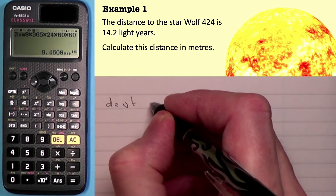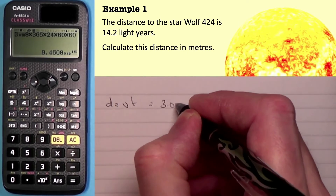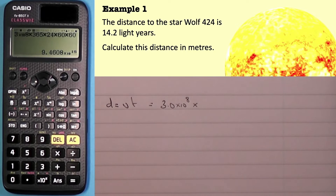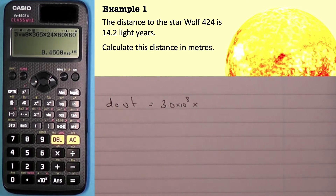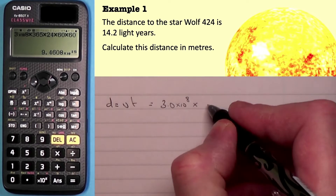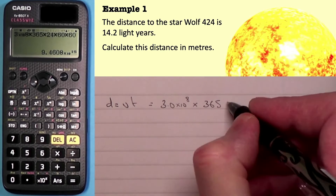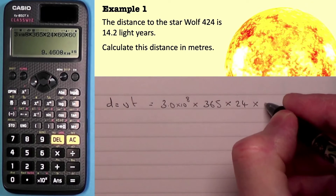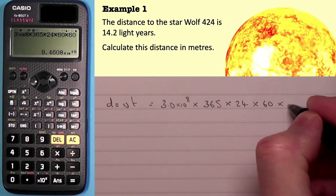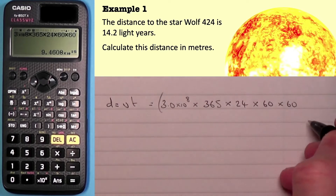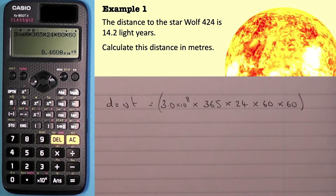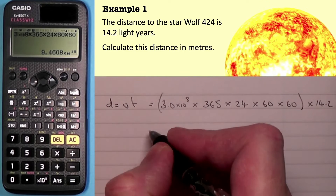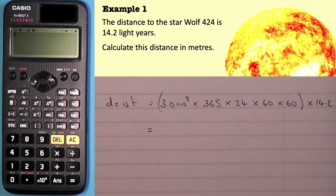We substitute for the speed of light: 3.0 times 10 to the power of 8, multiplied by the time for 14.2 years. What I'm going to do is work out one light year and then multiply that by 14.2. So we start with 365 days in a year, times 24 hours in a day, times 60 minutes in an hour, times 60 seconds in a minute — I'll place all of that in brackets, giving one light year — then multiply by 14.2.